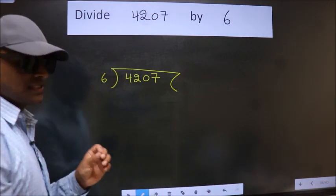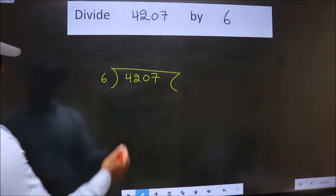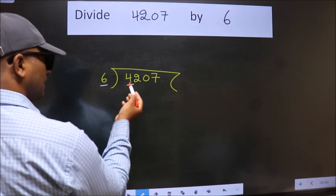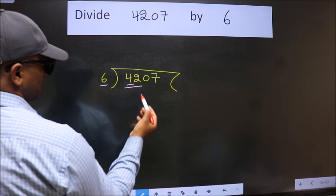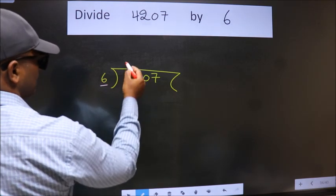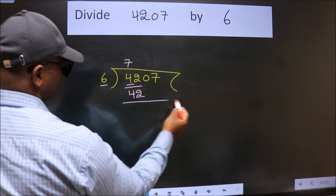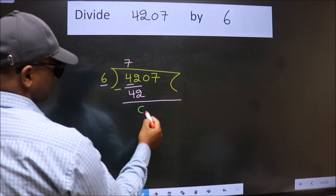This is your step 1. Next, here we have 4. Here 6. 4 is smaller than 6. So, we should take 2 numbers, 42. When do we get 42? In 6 table, 6 7s 42. Now, we should subtract. We get 0.